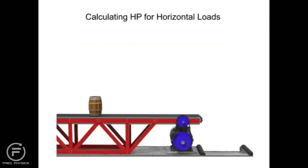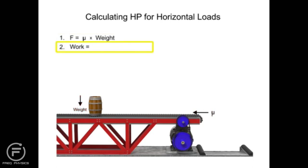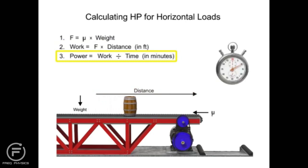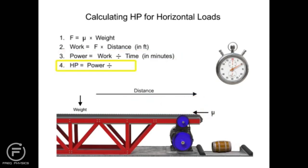Once this force is determined, it's easy to calculate the required horsepower to move a horizontal load. First, find the horizontal force required by multiplying the coefficient of friction by the weight. Then determine the amount of work required by multiplying the force by the distance in feet to be moved. Next, calculate the power by dividing the work by the time in minutes. Then convert to horsepower by dividing the result by 33,000. Finally, add 5% to compensate for estimated friction losses in the motor or cylinder.